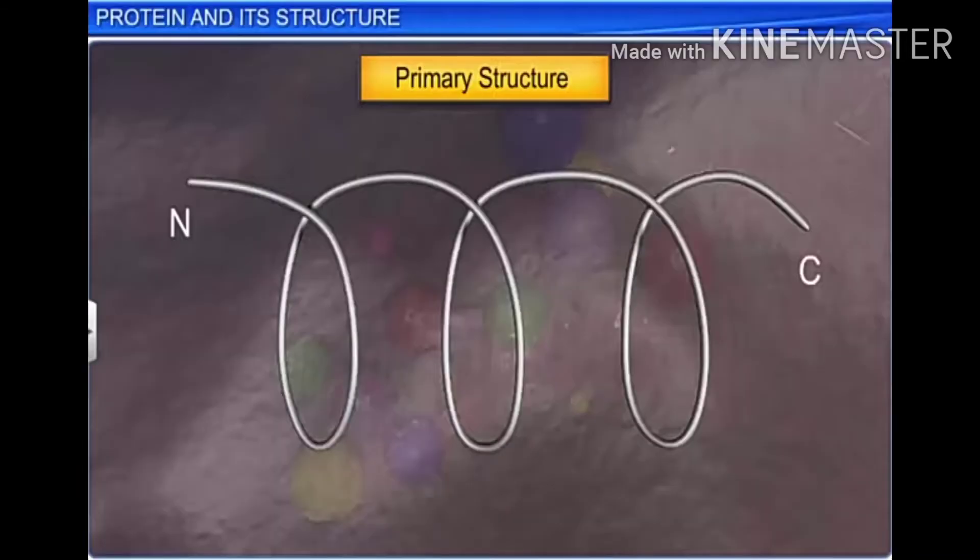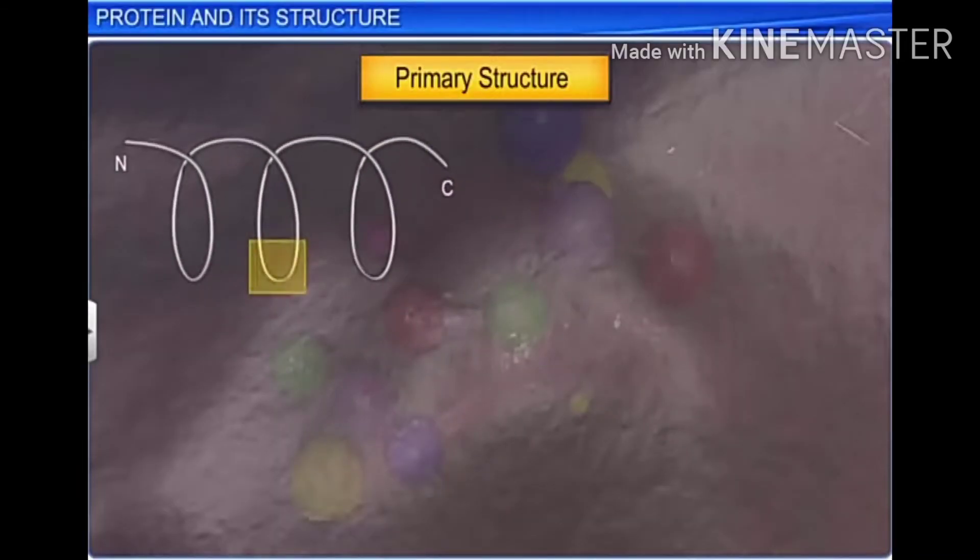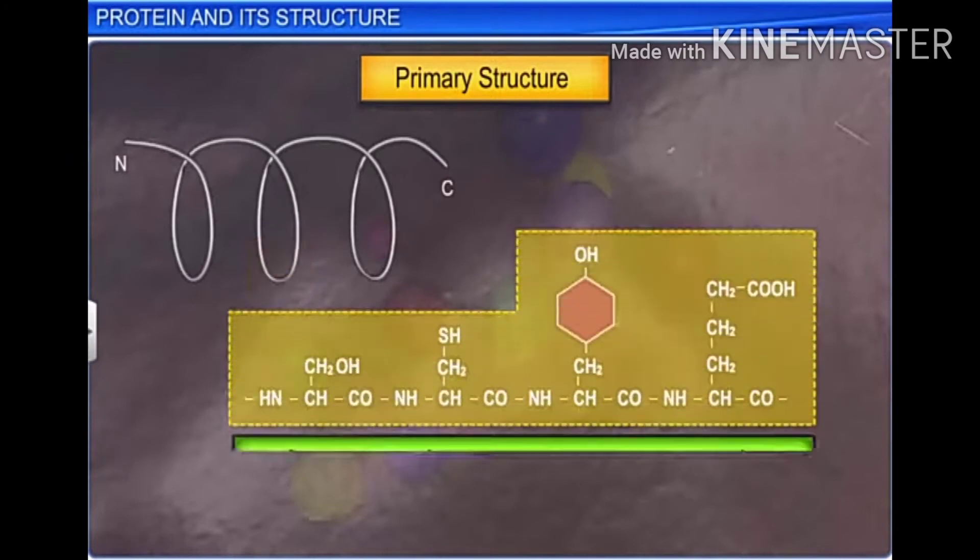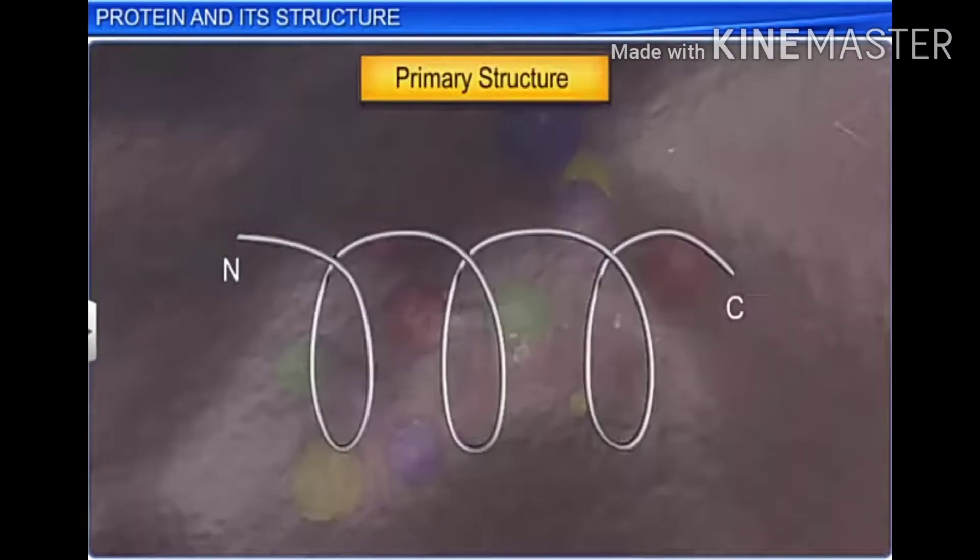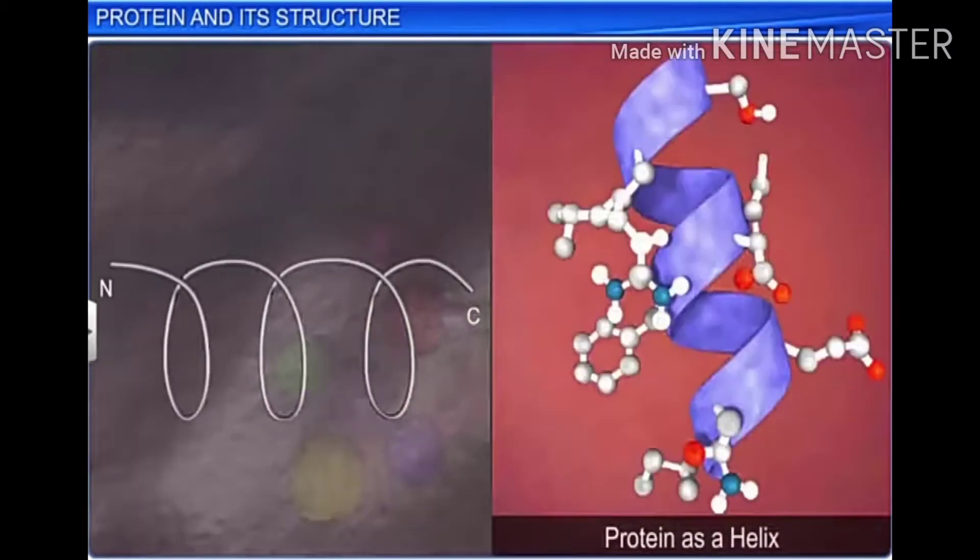The protein thread is represented as a horizontal straight line so that the position of the amino acids can be determined. However, in nature, proteins are not completely straight but are folded in the form of a helix, somewhat like a revolving staircase.